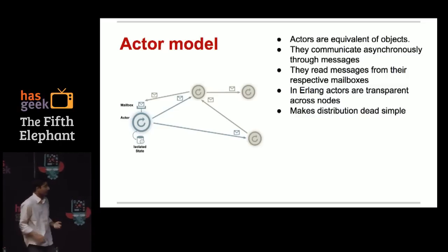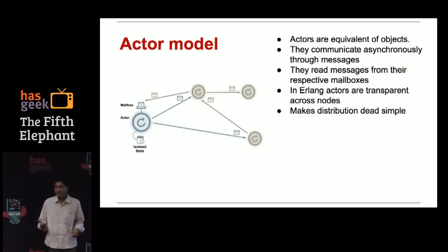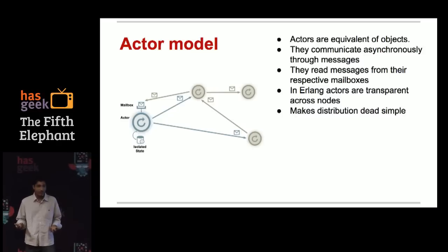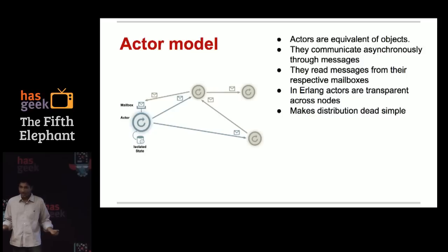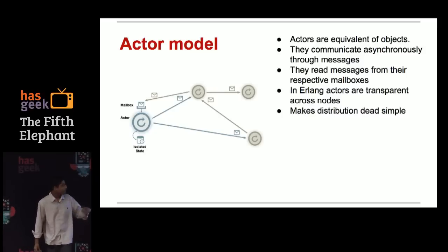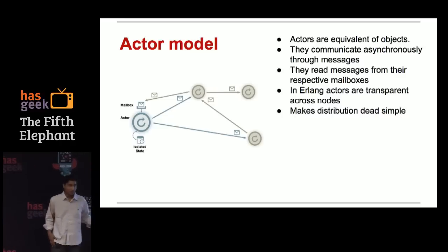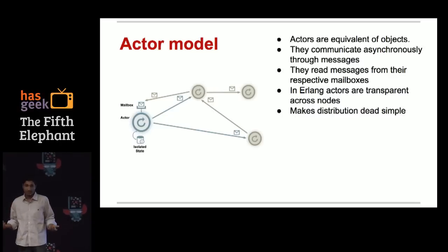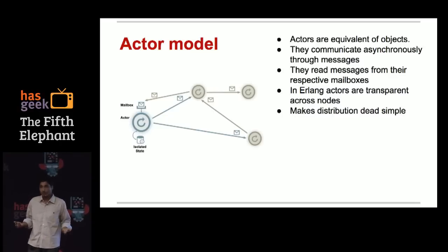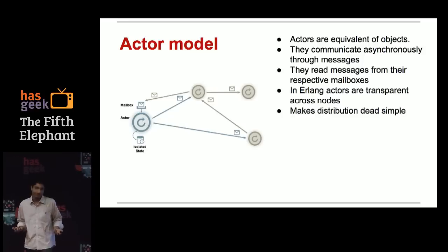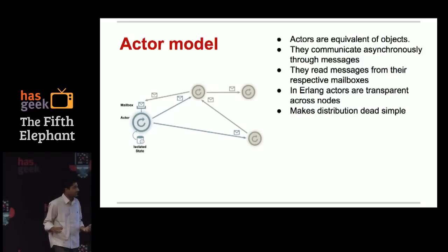There are two types of model to achieve concurrency: one is the CSP paradigm — communicating sequential processes — and the other is the actor model. Languages like Go and Haskell follow the CSP paradigm, but Erlang follows the actor model. In the actor model, you can think of actors as objects — although that's not completely accurate for object-oriented programmers, it helps as an analogy. Each actor can communicate with any other actor.